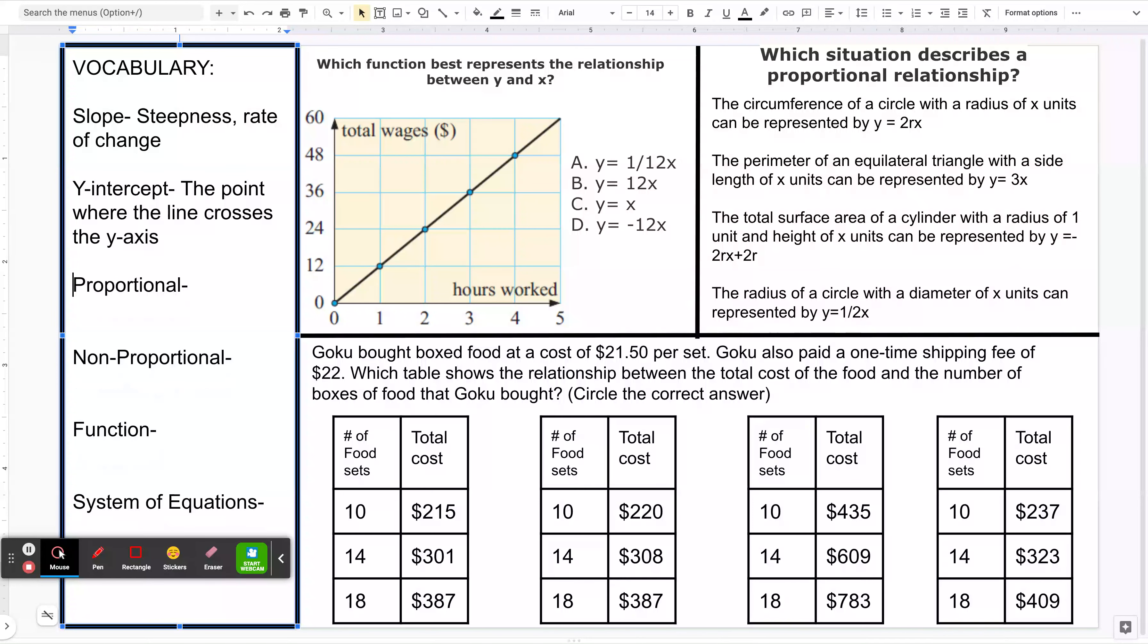And then the word proportional means it goes through the origin. Non-proportional is the opposite of proportional. It doesn't go through the origin. And remember, the origin is zero, zero.